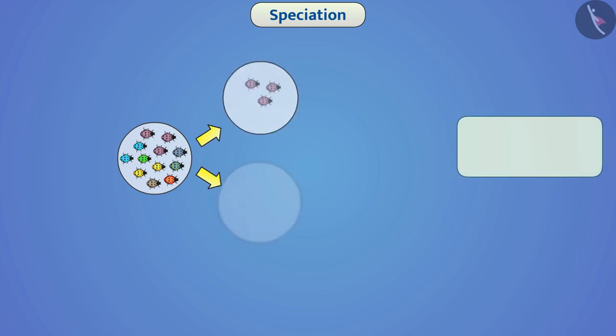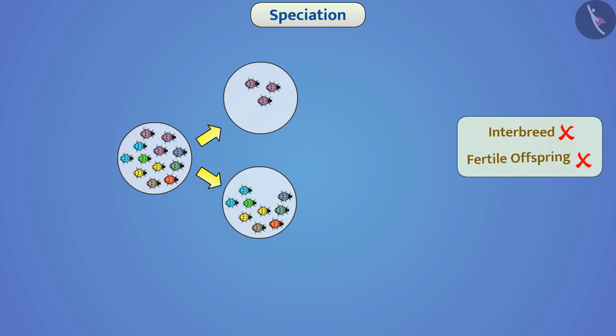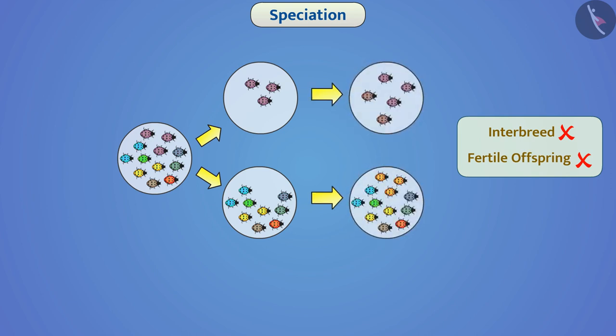Sometimes, due to various reasons, existing species of organisms get divided into two groups that cannot interbreed with each other and cannot produce fertile offspring. In such a situation, we say that new species have been developed from the existing species. We call it speciation.